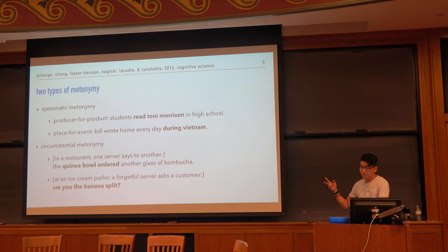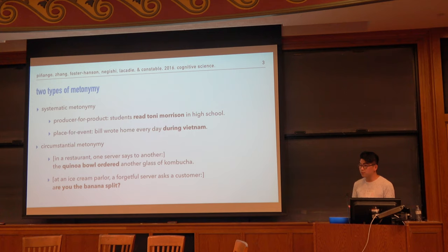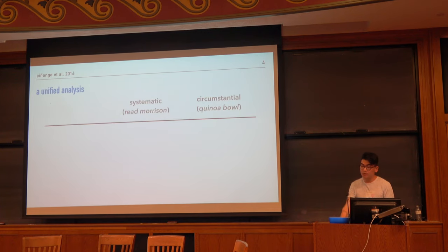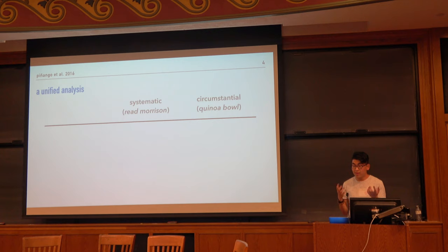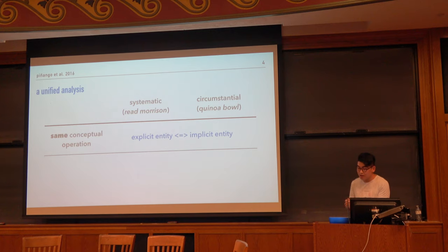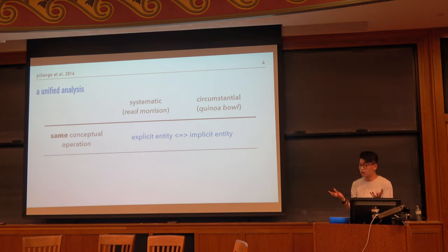Traditionally, these two types of metonymy have been treated separately in the linguistic literature. The systematic one is treated as being performed as a lexical operation, whereas the latter is being performed as some sort of pragmatic inference in a given context. Instead, in our paper, we find psycholinguistic and neurolinguistic evidence that supports a unified analysis — that the two types of metonymy actually share the exact same underlying conceptual operation, which is just creating a referential dependency, connecting an explicit entity with an implicit one in a conceptually associated and compositionally licensed way.